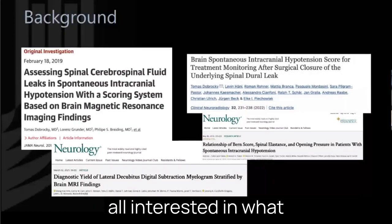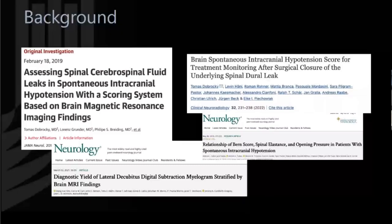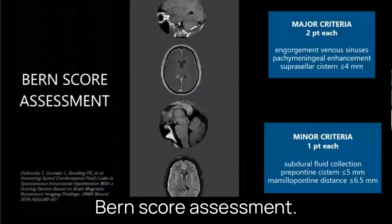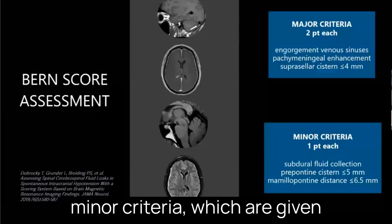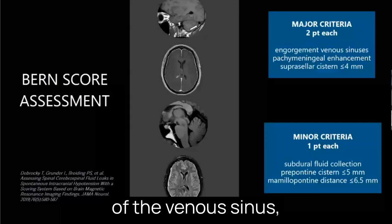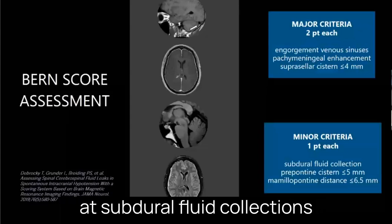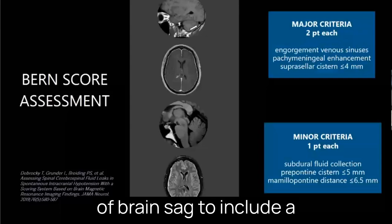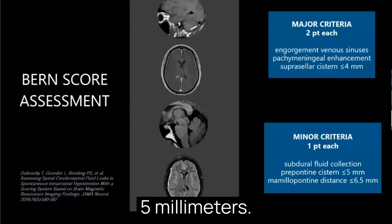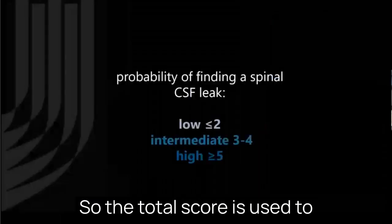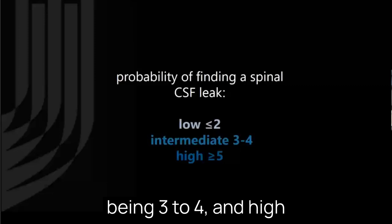We're all interested in what the brain MRI looks like following treatment — following closure of the dural leak or treatment for venous fistulas. Regarding Burn Score assessment, there are major criteria for which patients get two points each: engorgement of the venous sinus, pachymeningeal enhancement, and the suprasellar cistern measuring less than four millimeters. Minor criteria receive one point each: subdural fluid collections, a decreased prepontine cistern measuring less than five millimeters, and a mamillo-pontine distance measuring less than 6.5 millimeters. The total score stratifies probability of a spinal CSF leak — low is less than or equal to two, intermediate is three to four, and high is greater than or equal to five.